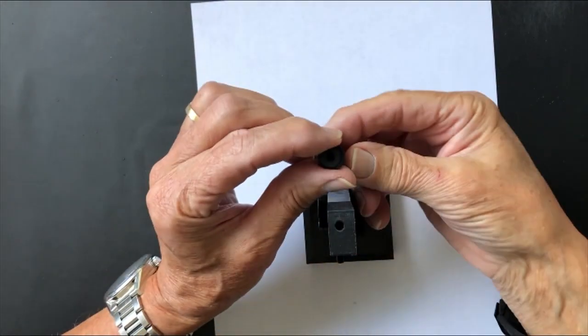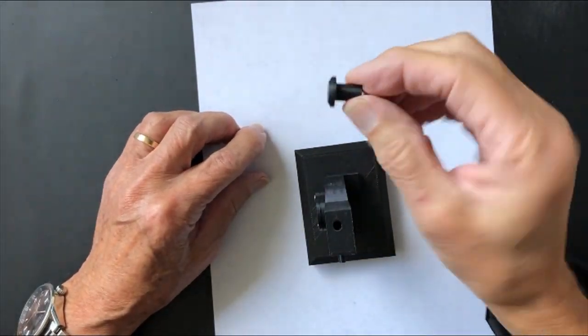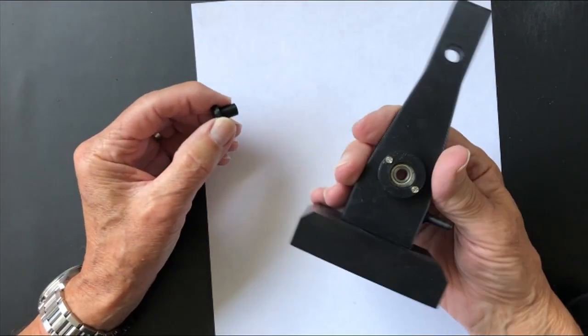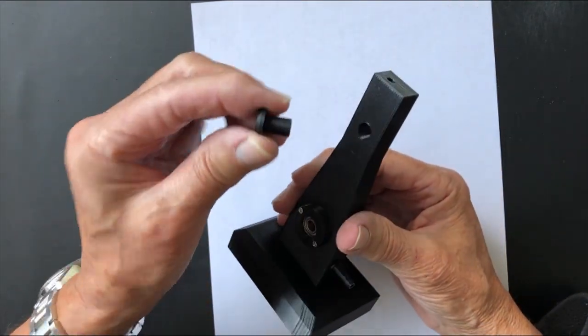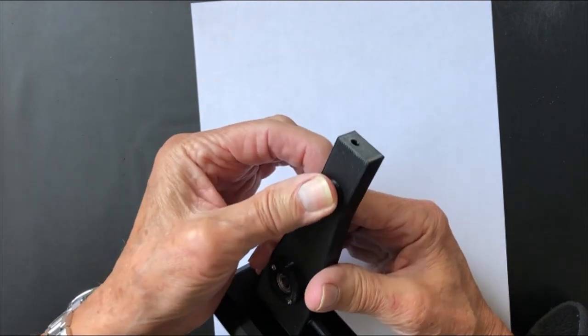The next thing we can do is put in the pivot bearing, which is this piece here which goes into the top, again making sure that it goes in in that direction and just push it into place.